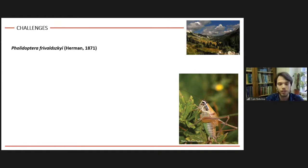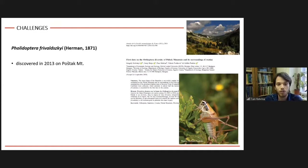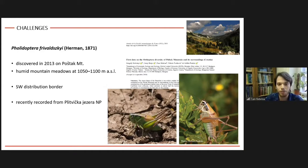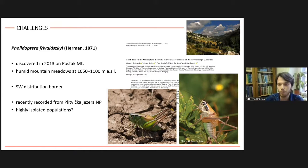In the Dinaric region, we have the case of Dectus frivaldskyi, a bush cricket distributed in southeastern Europe, which was discovered in Croatia only in 2013 on Poštak Mountain, inhabiting humid mountain meadows above 1000 meters. This was considered the only population in Croatia, at the southwestern distribution border of the species. Very recently, however, a specimen was photographed in Plitvice Lakes National Park, shifting the distribution border further west. It remains to be resolved how isolated these populations are, as the closest known populations in Bosnia are about 40 kilometers away, making them potentially quite isolated and under threat of extinction.